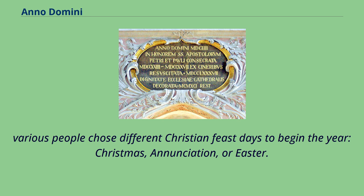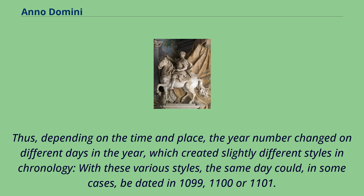Various people chose different Christian feast days to begin the year — Christmas, Annunciation, or Easter. Thus, depending on the time and place, the year number changed on different days in the year, which created slightly different styles in chronology. With these various styles, the same day could, in some cases, be dated in 1099, 1100, or 1101.